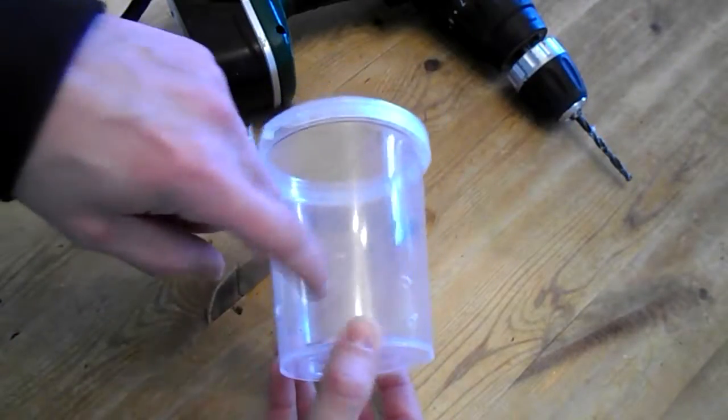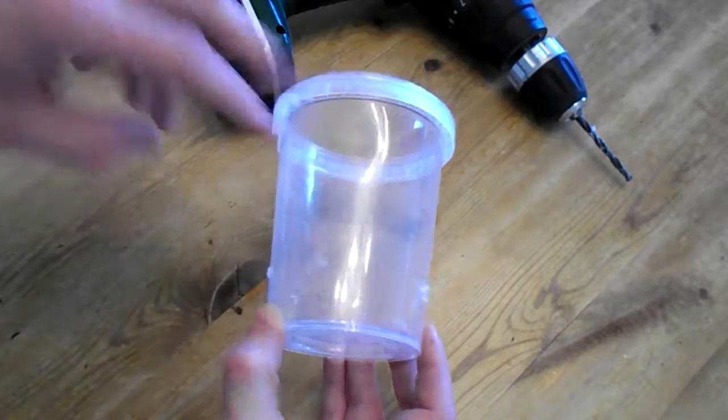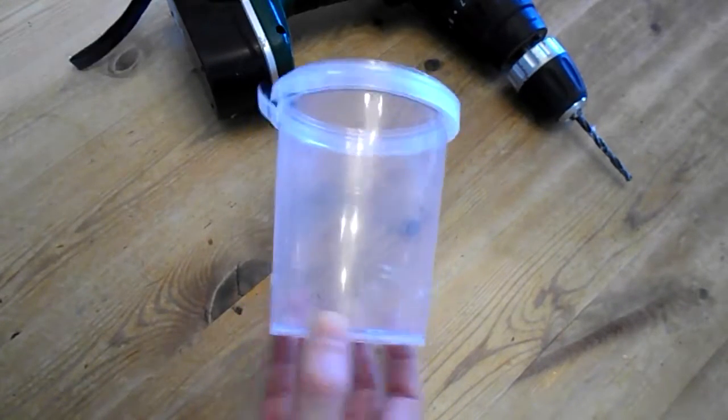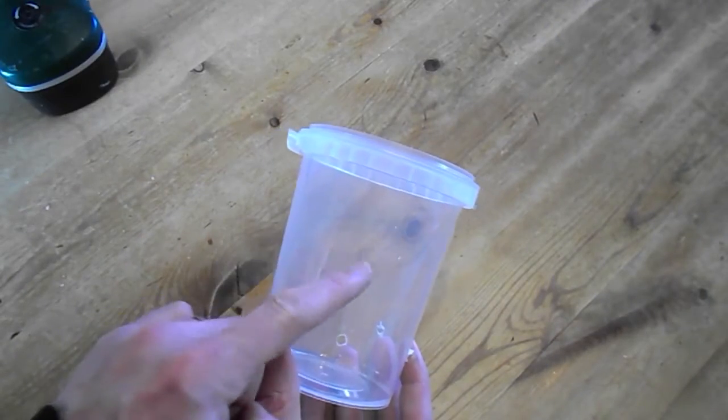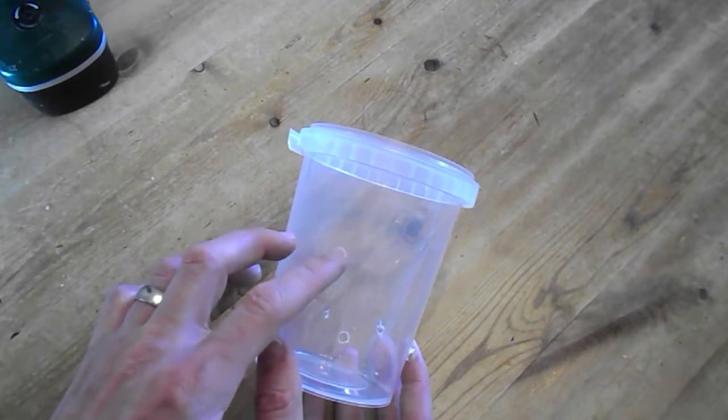There we are, some holes at the bottom. Just try to be gentle and not split the plastic container, or whatever container you're using. Now we'll need some very small holes about halfway up so we can put the mesh in that supports the ice.